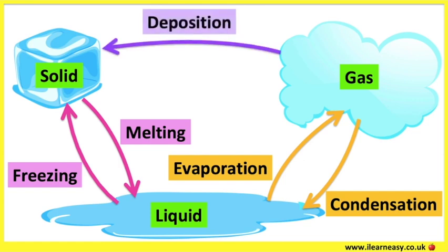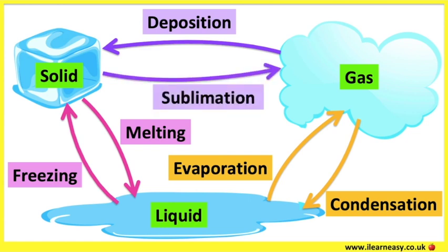When a gas changes into a solid, this is called deposition. For example, water vapour changes into ice. This can happen directly when it's very cold and can usually happen on windows during the winter. When a solid changes into a gas, this is called sublimation.